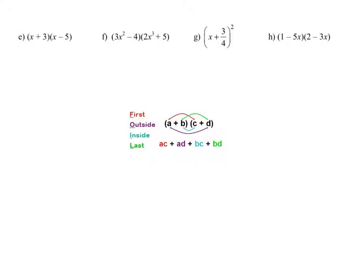In these examples, we're multiplying two binomials together using the distributive property twice. One way to think about this is the FOIL method: F stands for the first terms, O for the outer terms, I for the inside terms, and L for the last term. We use the FOIL method when multiplying two binomials together — looking at the first, the outer, the inner, and the last.